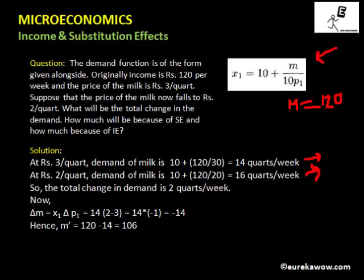We know that the total change in demand is 2. Now let us decompose it into income and substitution effects. We have the equation delta M equals X1 times delta P1. X1 is initially 14, and the change in price is 2 minus 3, so delta P1 equals minus 1. Therefore delta M equals minus 14. So M dash equals 120 minus 14, which is 106.